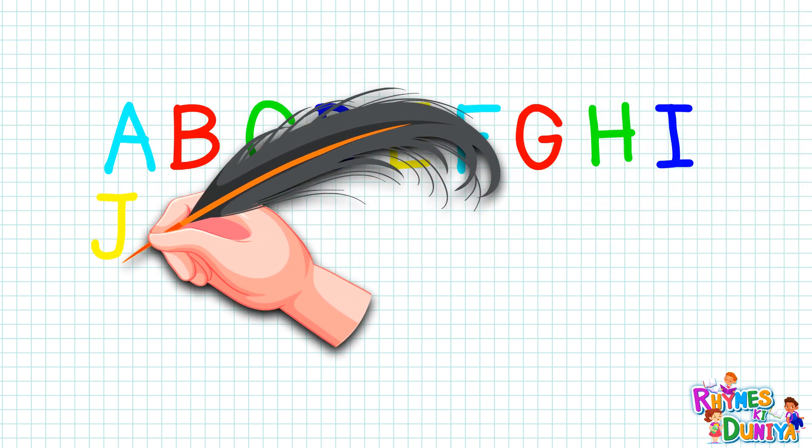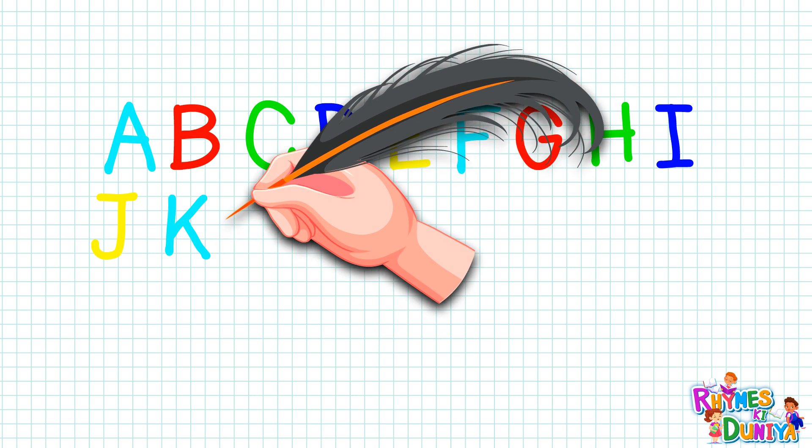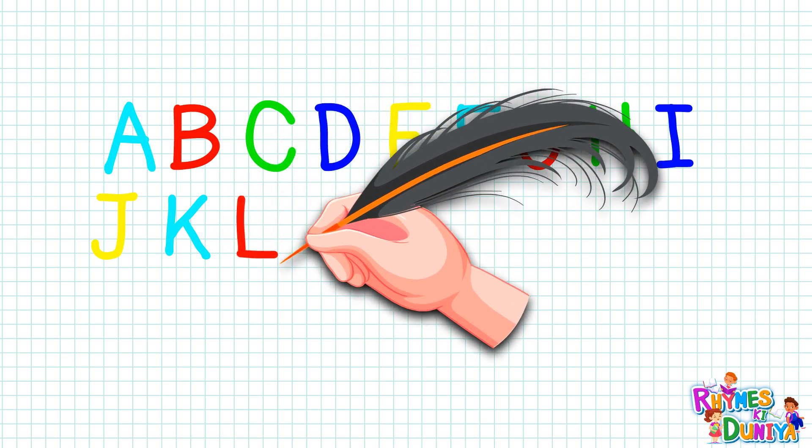J. J for jug. K. K for kite, K for kite. L. L for lion, L for lion.